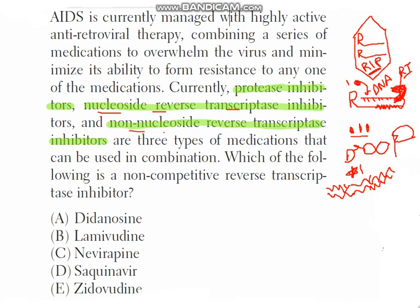The reverse transcriptase enzyme has two functions. First, it adds new nucleotides to the forming strand and completes the formation of the DNA strand. Second, it destroys the template RNA once the complete DNA has been formed.